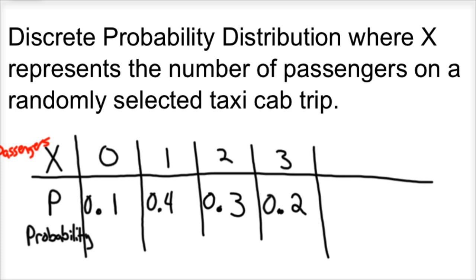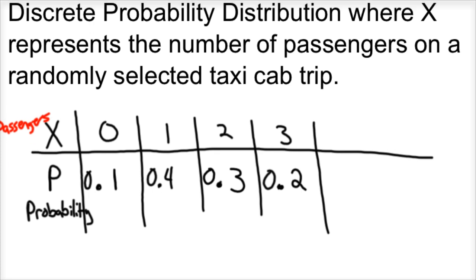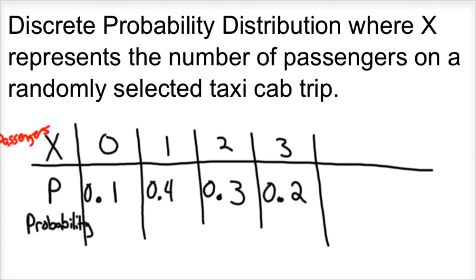So what does that mean? Here's an example. This is a discrete probability distribution where I let X represent the number of passengers on a randomly selected taxi cab trip. So imagine we're in New York, we're in a cab, and you could have the possibility of zero riders, zero passengers on this trip, because maybe the driver's just heading back to the garage. However, you could have one passenger, you could have two passengers, or you could have three passengers to fill up the back seat.